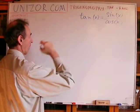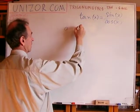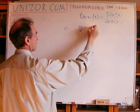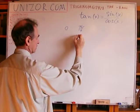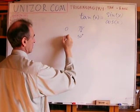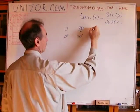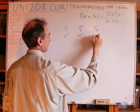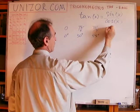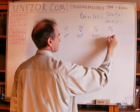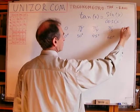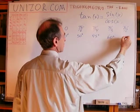Now, basic angles are 0, pi over 6 which is 30 degrees, pi over 4 which is 45 degrees, pi over 3 which is 60 degrees, and pi over 2 which is 90 degrees.